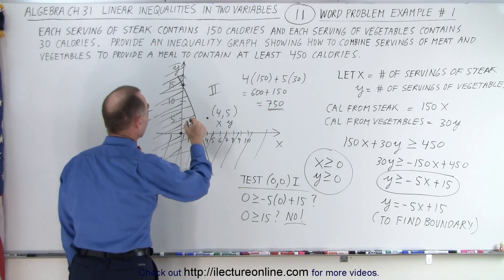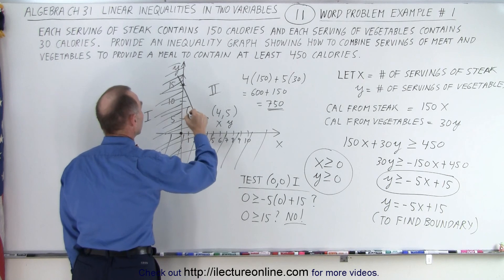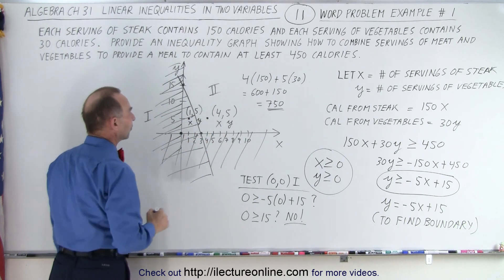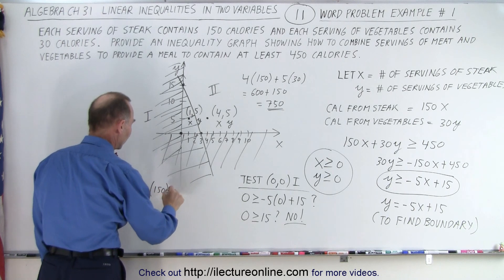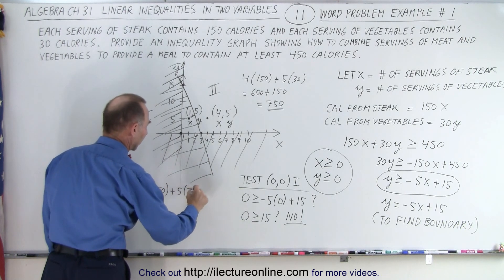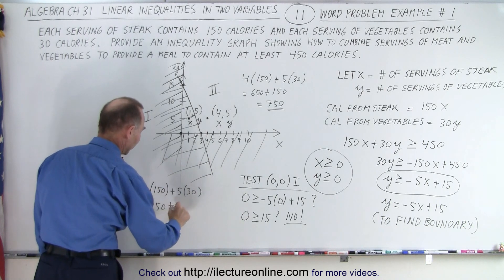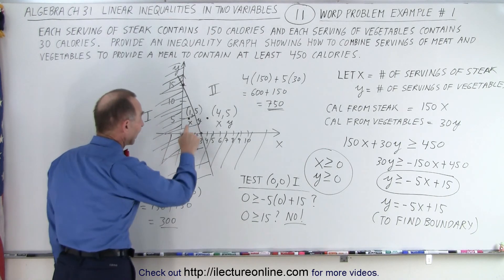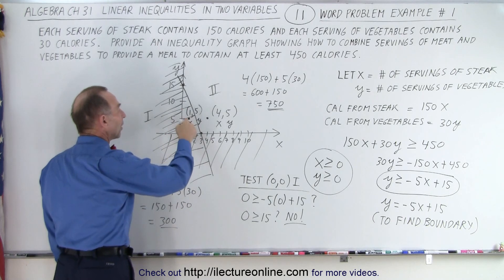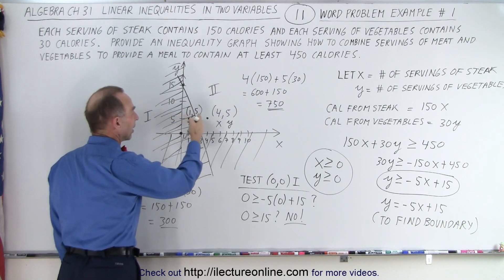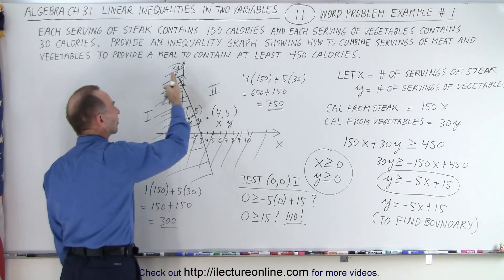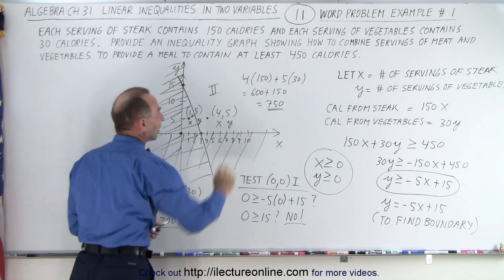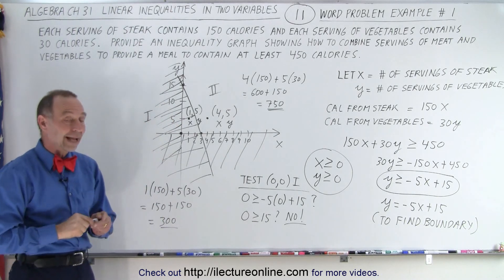What if I take a meal right here? A meal right there, where I have 1 and 5. That's 1 serving of steak and 5 servings of vegetables. So 1 serving of steak of 150 calories, plus 5 servings of vegetables of 30 calories, that's 150 plus 150, which is 300 calories, which is not at least 450. That's why in this region, I can't put a meal together where the meal will have at least 450 calories. I need to be on this side of the line, above the x-axis, and to the right of the y-axis. This is the region right here that provides combinations of meals that give me at least 450 calories. And that is how it's done.